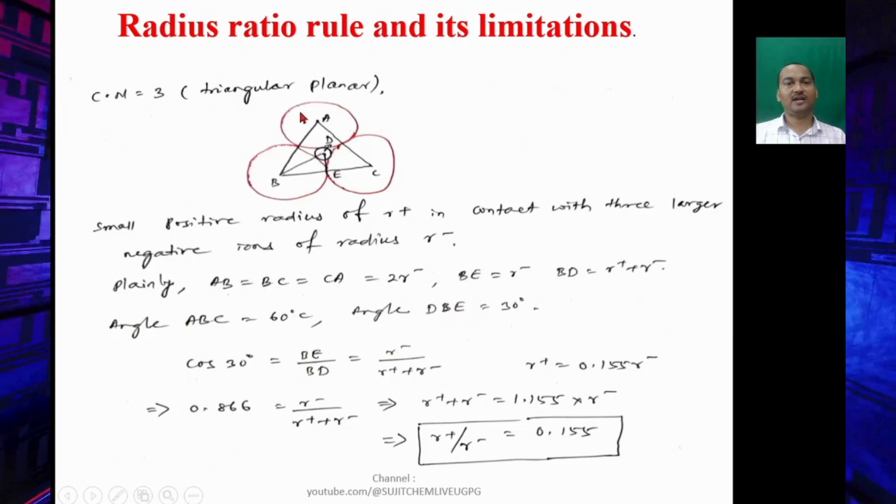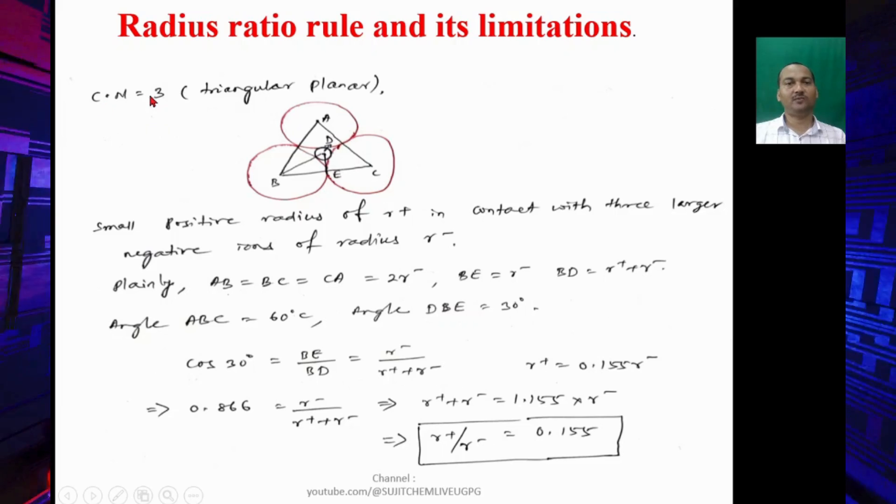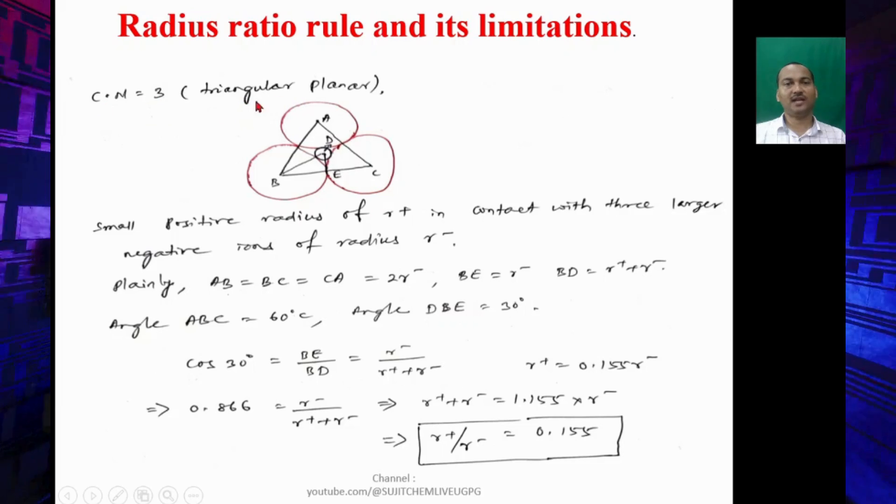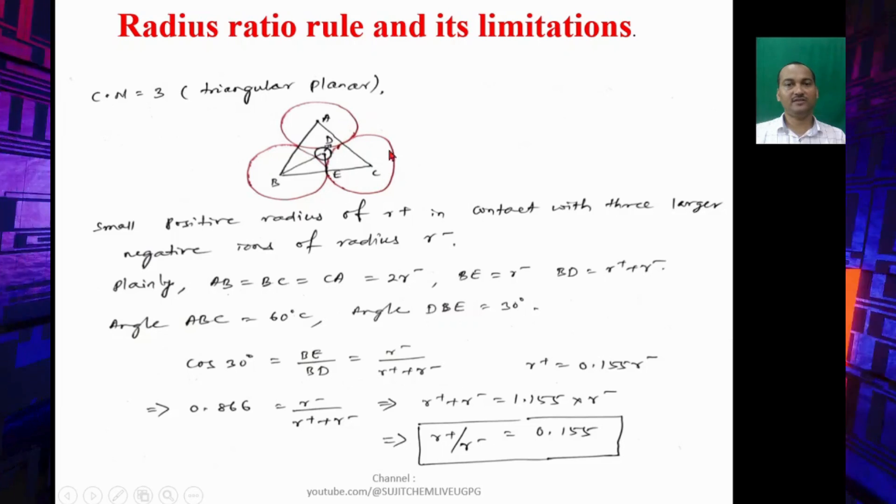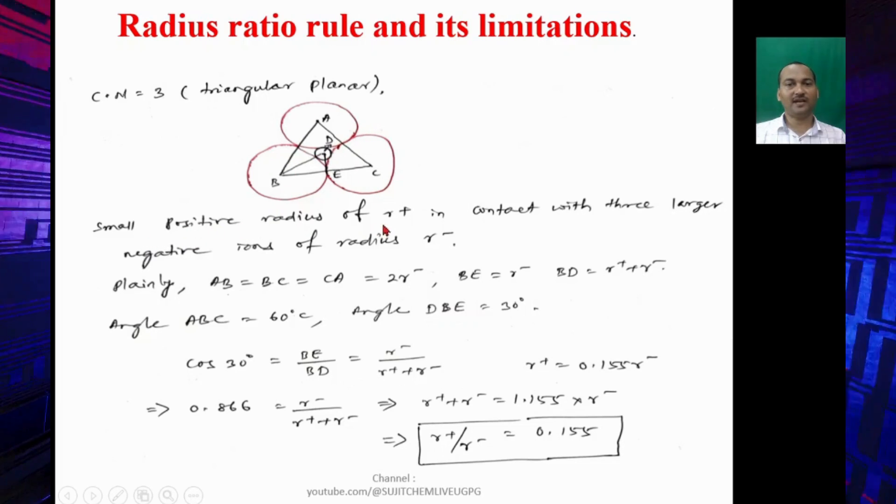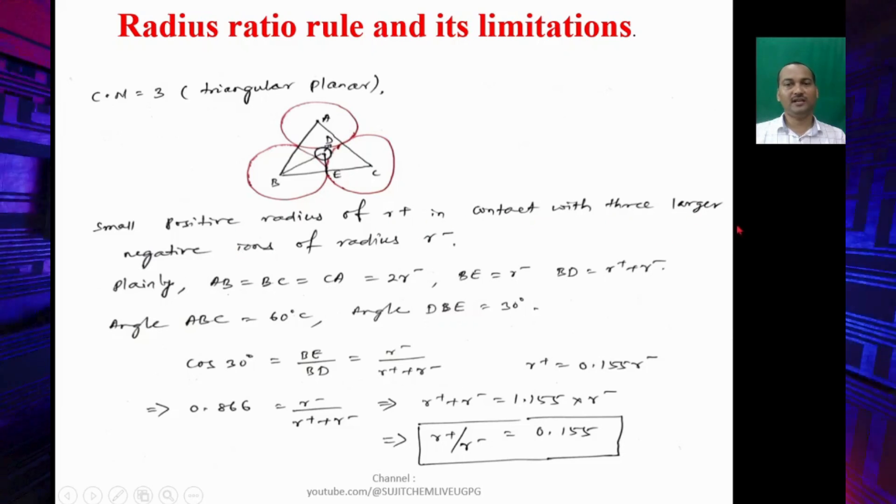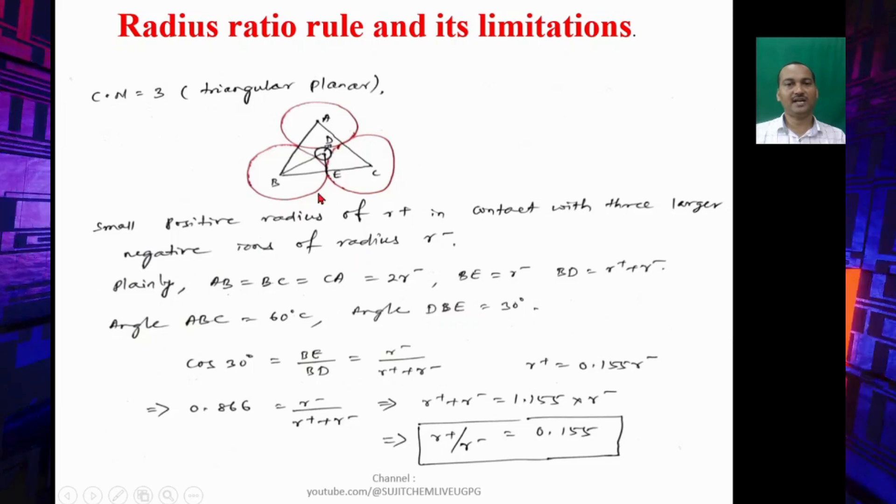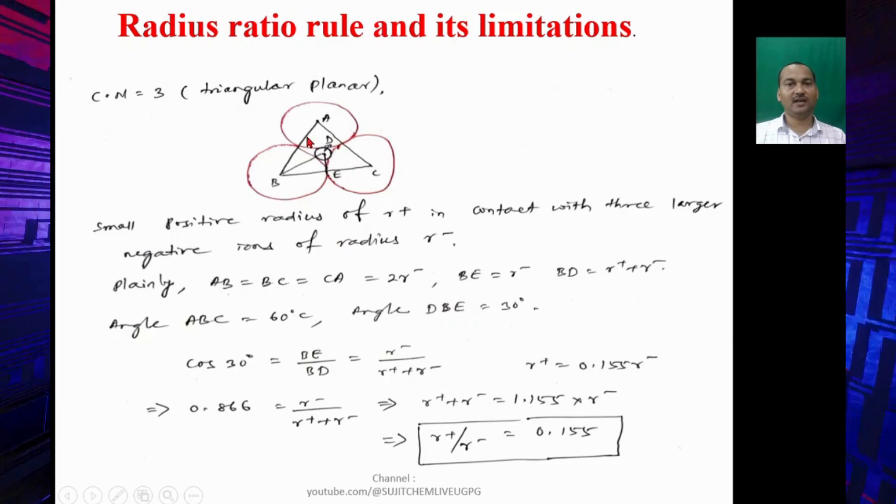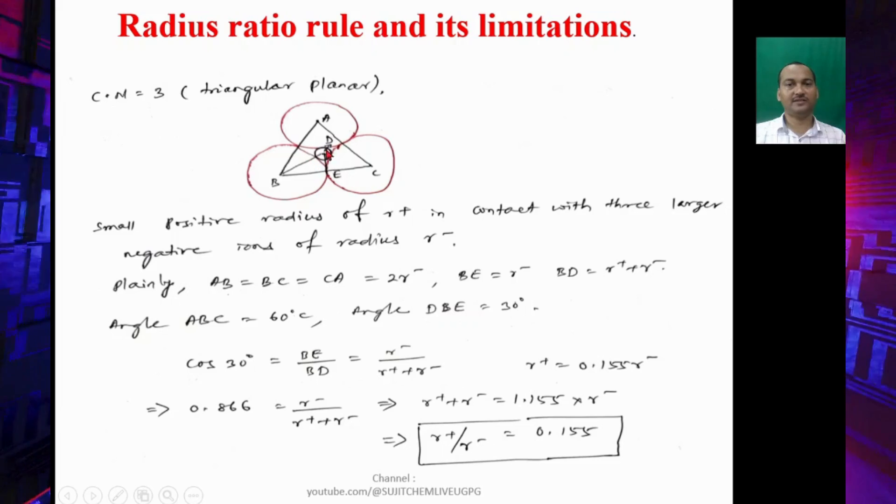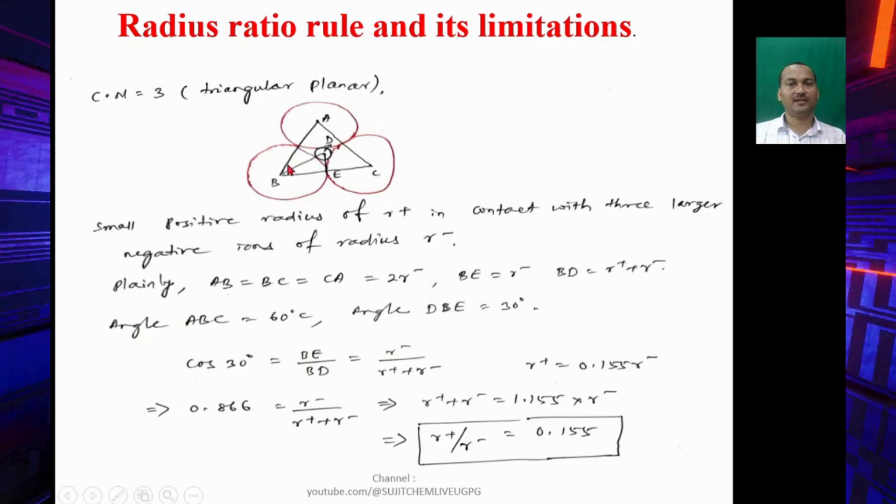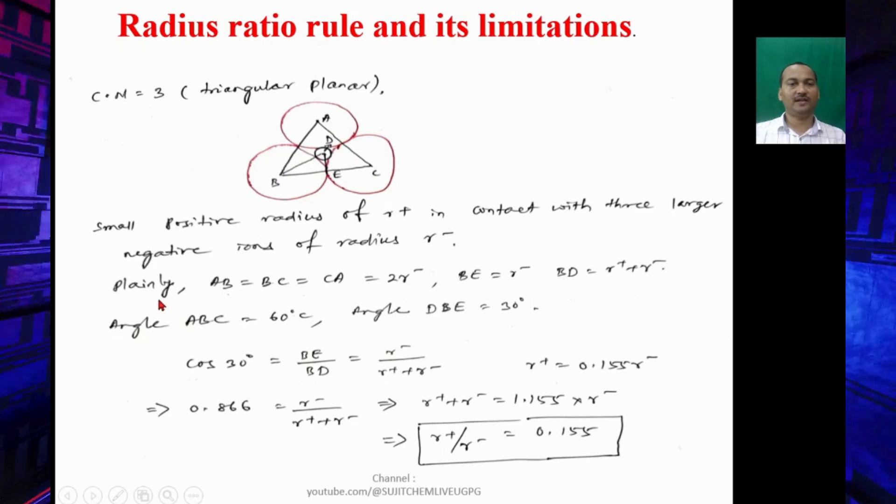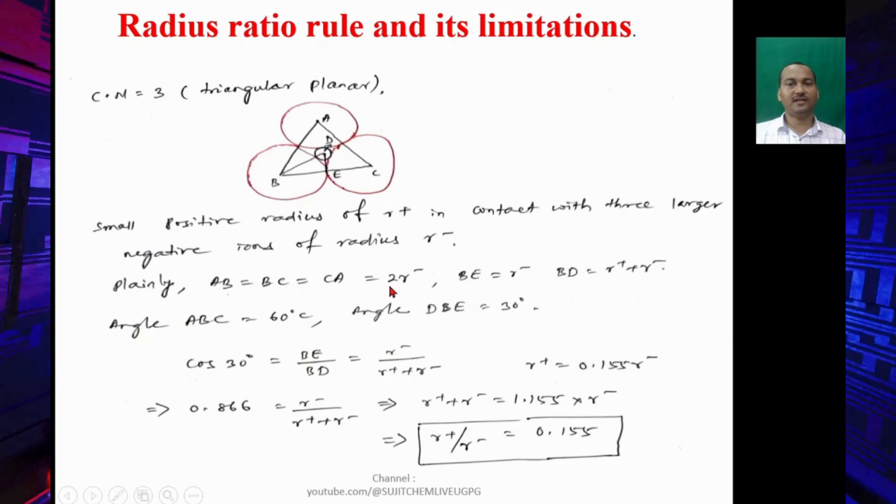Let's calculate the radius ratio for coordination number crystal whose structure should be triangular planar. Here this is the cation and it is in contact with three anions. The small positive radius R+ ion in contact with three larger negative ions having radius R-. These three are anions, big circles, and at the center we have a small circle, the cation. Plainly, if we connect the centers we can get this triangle ABC. Plainly AB = BC = CA = 2R-.